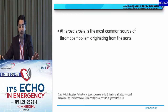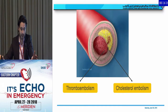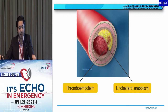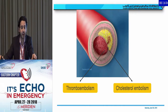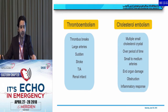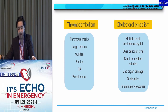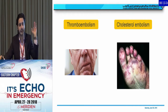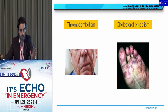Atherosclerosis is the most common source of thromboembolism coming from the aorta. With atherosclerosis disease, you have a rupture of the fibrous cap and then you have either thromboembolism or cholesterol embolism — both give totally different clinical scenarios. Thromboembolism involves a large thrombus break affecting large arteries suddenly: stroke, TIA, renal infarction. For cholesterol embolism, it's multiple small cholesterol crystals embolizing over a period of time into small to medium arteries, resulting in end organ damage and inflammatory response. This is how to differentiate quickly based on clinical picture.